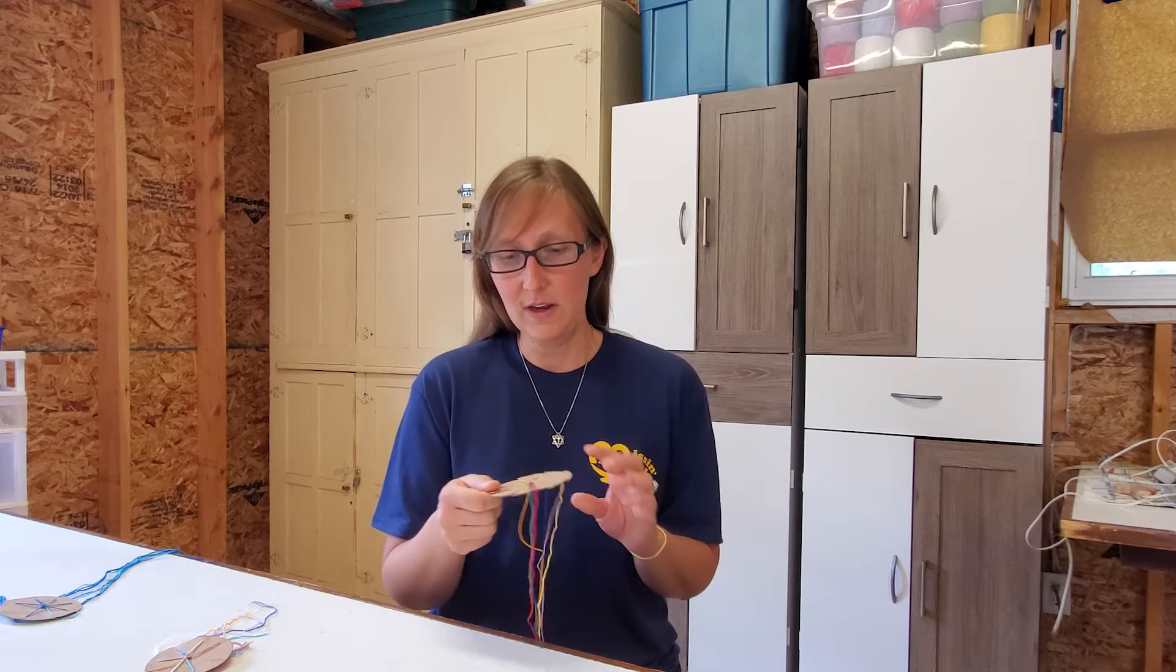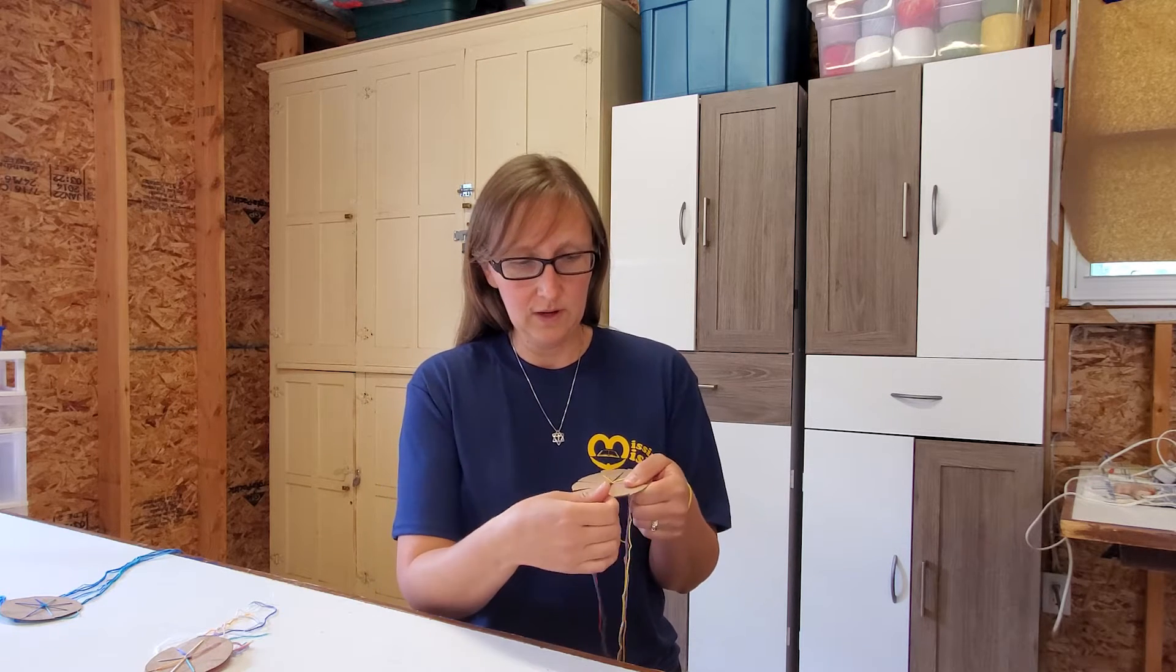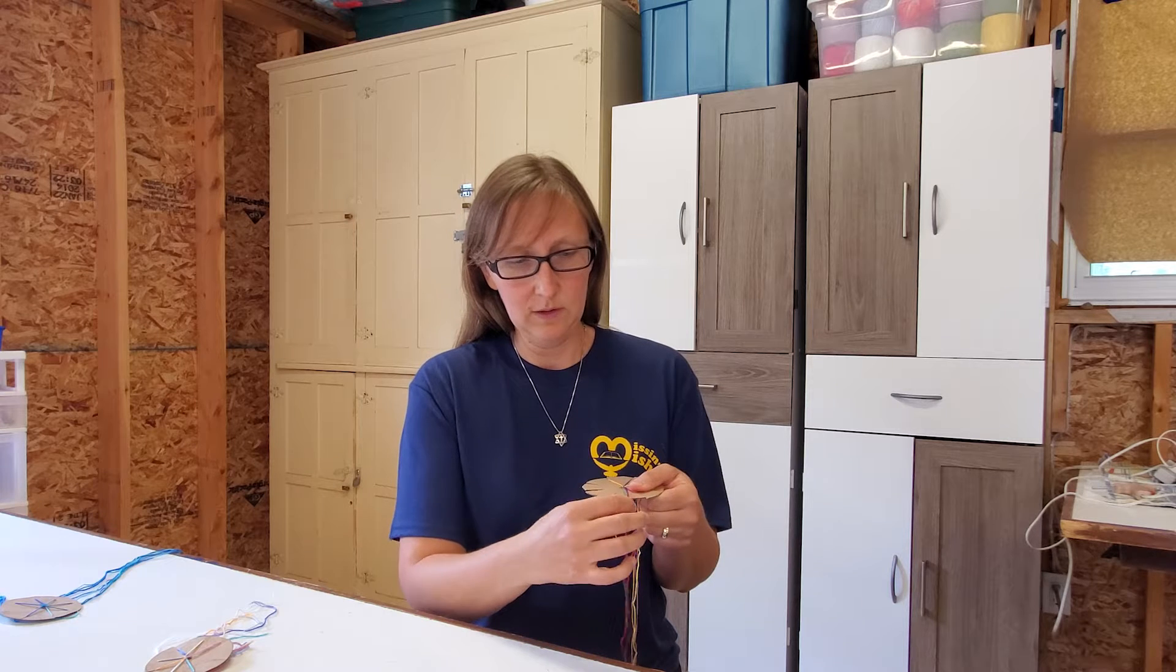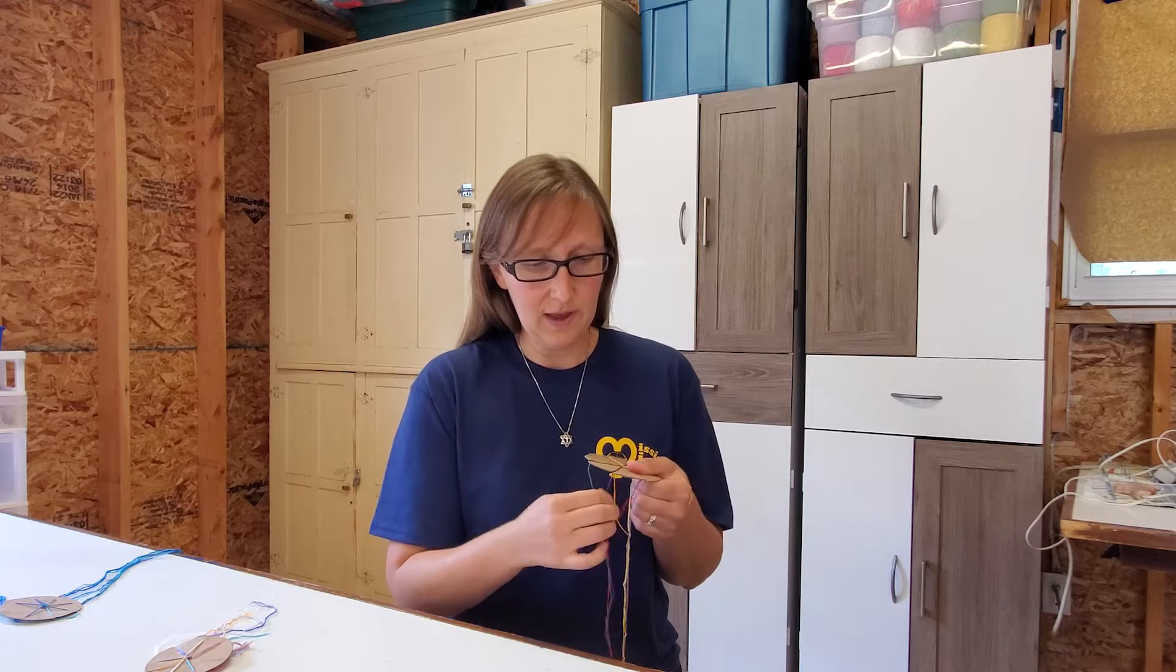What you want to do is take your circle out of your box and separate all the strings out, and pop them in one string in each of the slots.